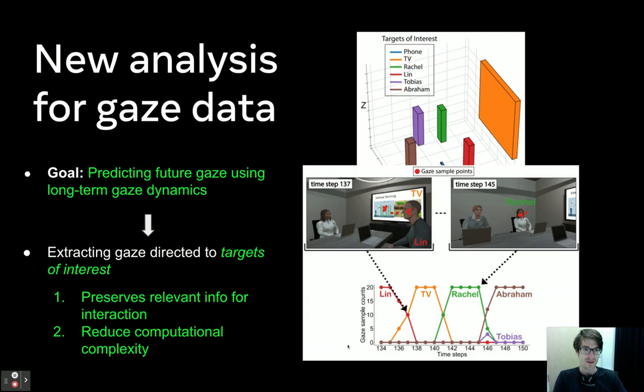Here's an example of our input data. It is a time series, so there are time steps on the x-axis and the number of gaze samples in a time step on the y-axis across the different target objects represented by these different colored lines.